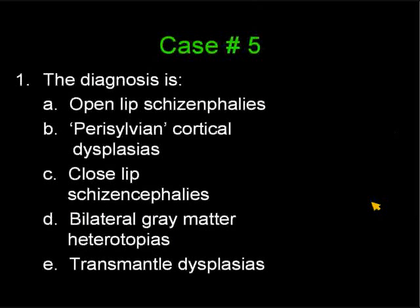The diagnosis is: A, open lip schizencephaly; B, perisylvian cortical dysplasia; C, closed lip schizencephaly; D, bilateral gray matter heterotopias; and E, transmural dysplasia.